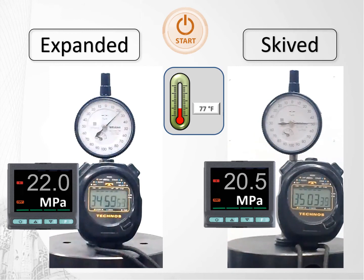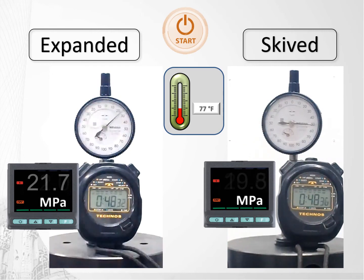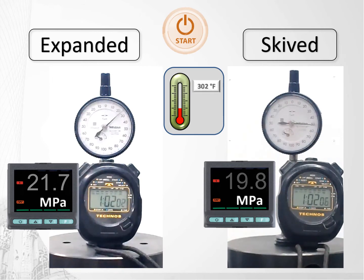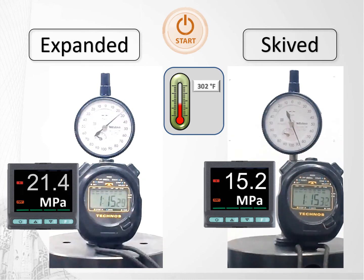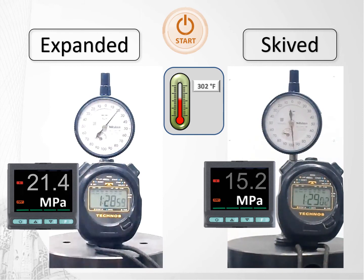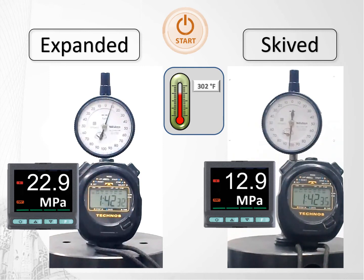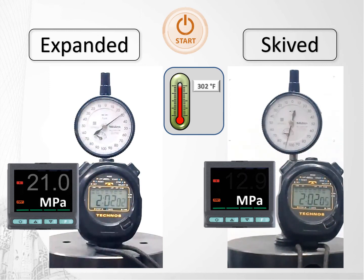30 minutes into the test at room temperature, it can already be noticed how much more stress loss the skived gasket has when compared to the expanded. We then start the heating phase. It's possible to see how immediately it affects the skived gasket — the stress just keeps on falling. As the test nears its end, the skived gasket has nearly half the load retention the expanded had. Very, very poor results once again.